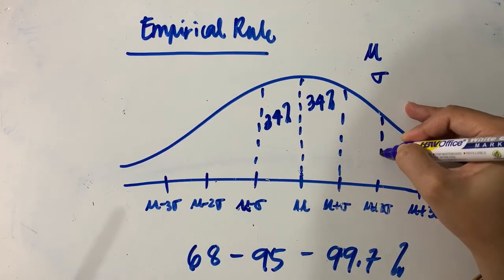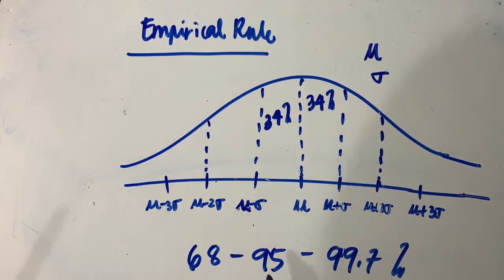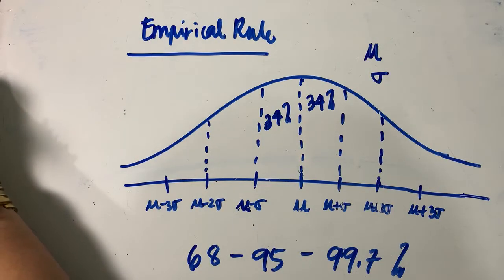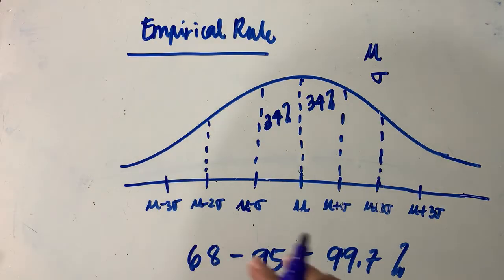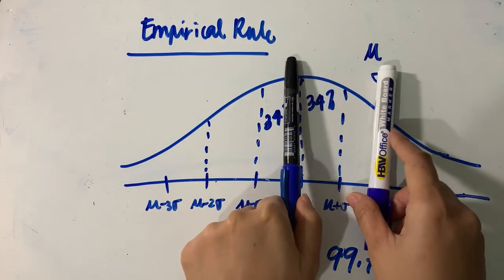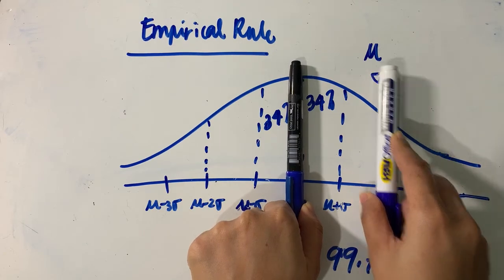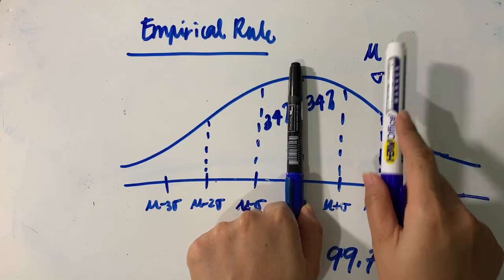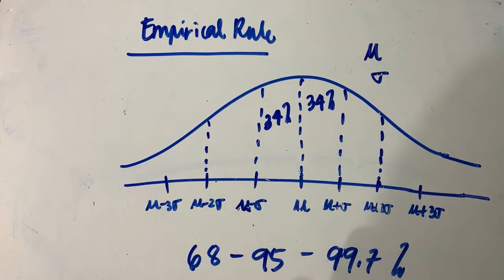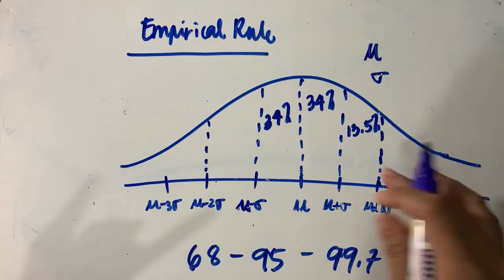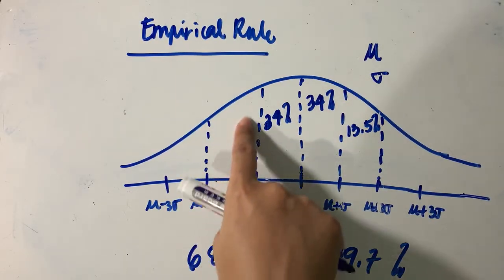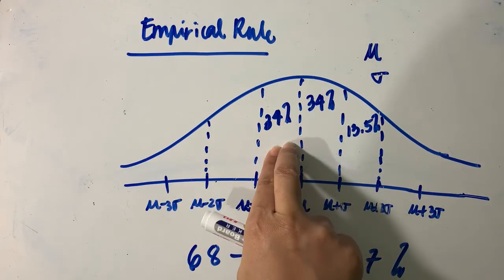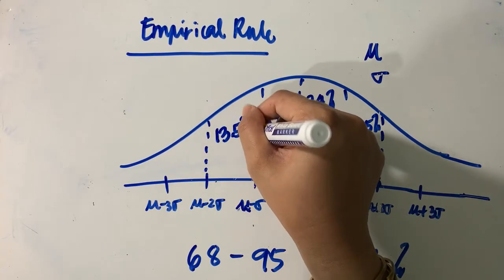Two deviations to the right and two deviations to the left gives approximately 95% of your distribution. Since 95% divided by two is 47.5% per side, and we already have 34% in the inner region, the remaining part — two standard deviations above the mean — is 47.5% minus 34%, which equals 13.5%. The same is true on the left side: 13.5%.